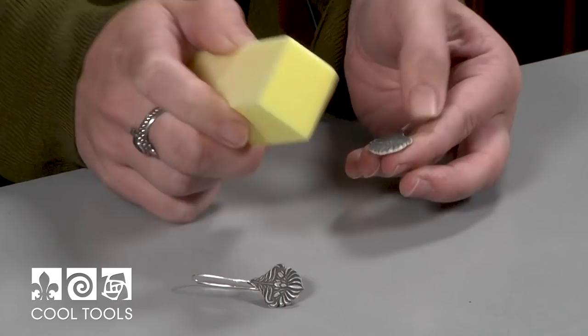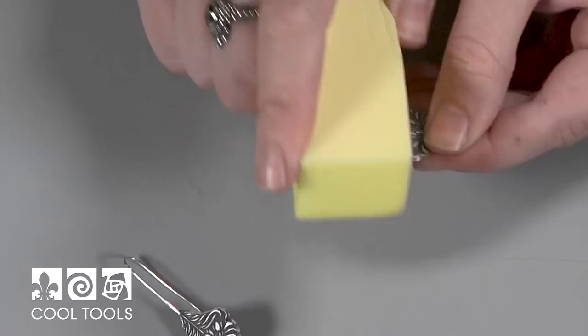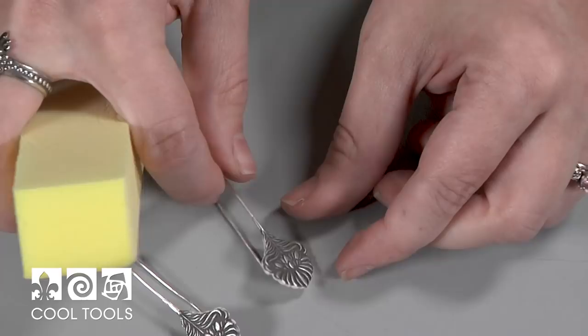After I'm satisfied with how much patina has been removed and the contrast in these pieces, I'm going to put them in the tumbler. And again, not only will that really shine up the top surface, but it's also going to harden this wire. All right. So these pieces are ready to tumble.